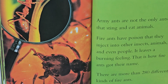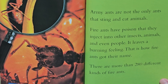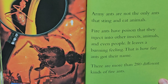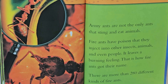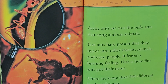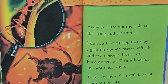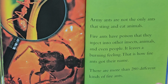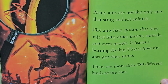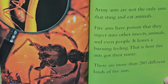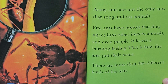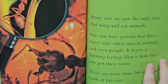Fire ants. Army ants are not the only ants that sting and eat animals. Fire ants have poison that they inject into other insects, animals, and even people, and it leaves a burning feeling. That is how fire ants got their name. There are more than 280 different kinds of fire ants.